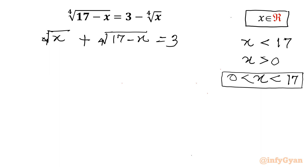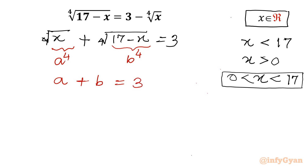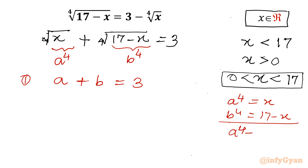Now I will use substitution. Let the first radicand x equal to a to the power 4, and 17 minus x equal to b to the power 4. So 4th root of a⁴ is a, plus 4th root of b⁴ is b, equal to 3 — this is equation 1. From a⁴ = x and b⁴ = 17 minus x, adding both gives a⁴ plus b⁴ equal to 17 — this is equation 2.